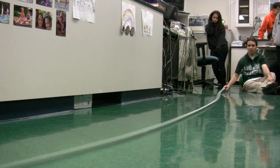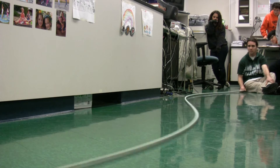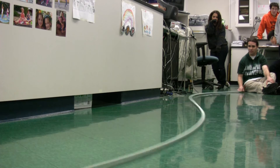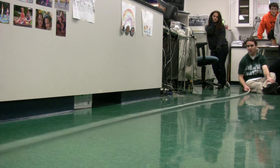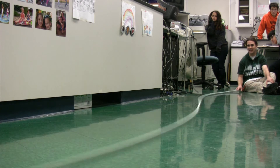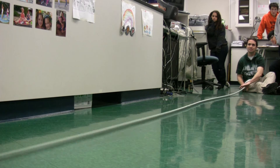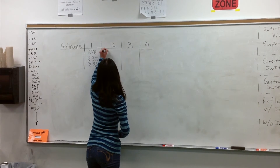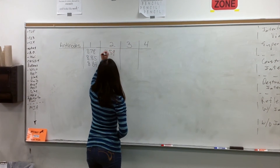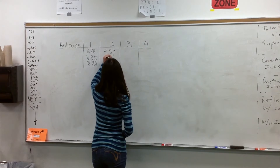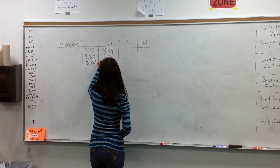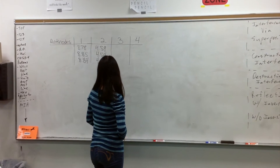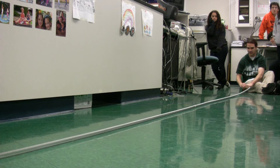I'm now going to switch to two antinodes. Timers, are you ready? Three, two, one, zero. One, two, three, four, five, six, seven, eight, nine, ten. 4.59. 4.54. 4.66. You can tell that the time for ten cycles is decreasing because the number of cycles per second is increasing.